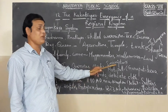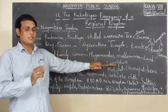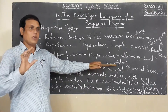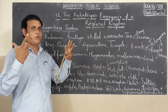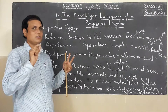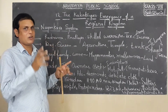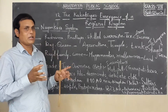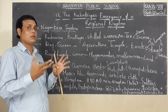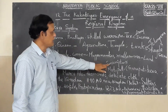These stone inscriptions are called Shasanalu. In those days, in the Shasanalu they wrote about their information — what they did, about their ruling, about their activities, how they fought against enemies, etc. If we read those inscriptions, we can know about their ruling and activities.